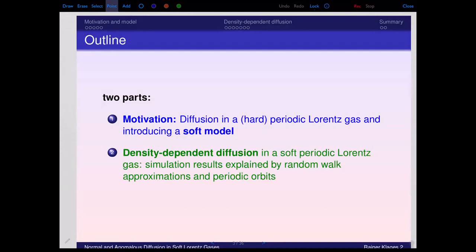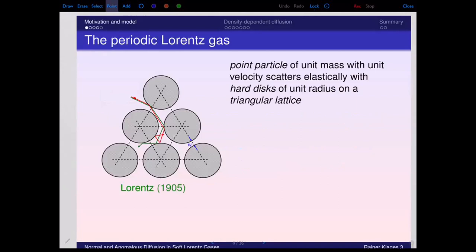Our results will be explained by simple random walk approximations for the diffusion coefficient, supplemented by an analysis in terms of periodic orbits. Just a brief reminder about the periodic Lorentz gas: it is a very famous model introduced by Henry Anton Lorentz in 1905 — more than a century ago. It consists of hard disks of certain radius set to unity on a triangular lattice.